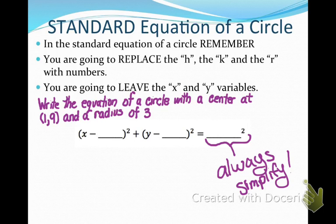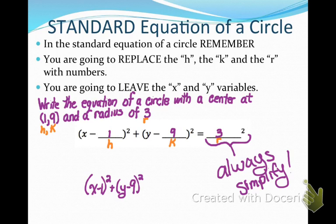Write the equation of a circle with a center at (1, 9) and a radius of 3. Remember h, k, and r in our equation. The center gives us h equals 1 and k equals 9, and our radius is 3. We plug in those values and simplify: x minus 1 squared plus the quantity y minus 9 squared equals 9, because 3 squared is 9. That's the standard equation for that circle.